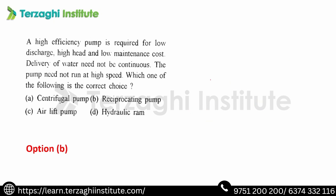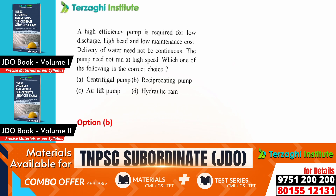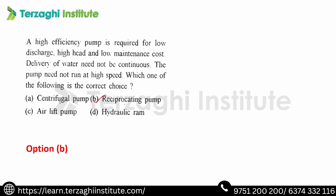A high efficiency pump is required for low discharge, high head, and low minimum capacity. Delivery of water need not be continuous. The pump need not run at high speed. The answer is reciprocating pump. Reciprocating pump is required when highly viscous liquid is used. Discharge is uneven and fluctuates. Low discharge and high head at low speed — the answer is reciprocating pump.